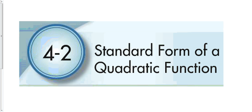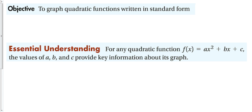4-2: standard form of a quadratic function. In this section, we're going to graph quadratic functions written in standard form. Our essential understanding is that for any quadratic function, f(x) = ax² + bx + c, the values of a, b, and c provide key information about its graph. We can tell a whole bunch of stuff based on just what a, b, and c are.